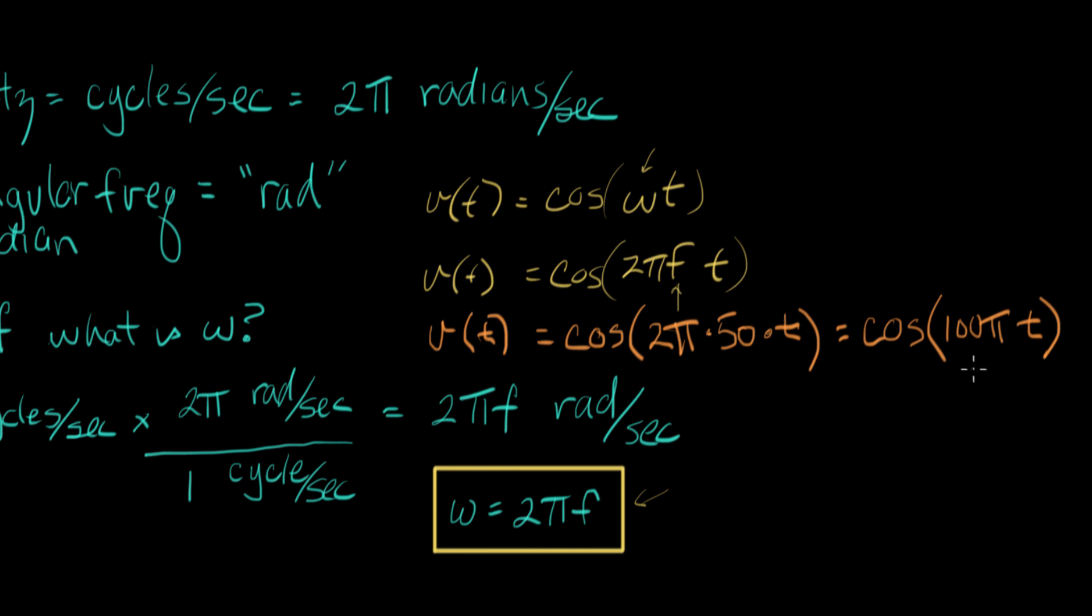So this number right here, 100 pi, that's omega. And this number right here is F. So that does it for our review of trigonometry. And we've introduced the idea of a sine wave where T is the argument to the trig function.